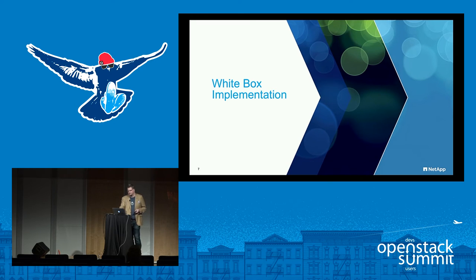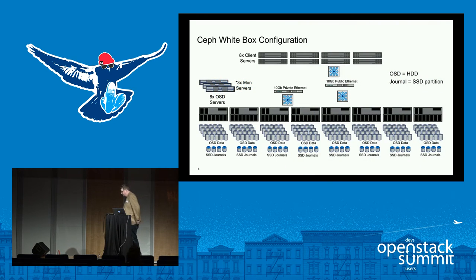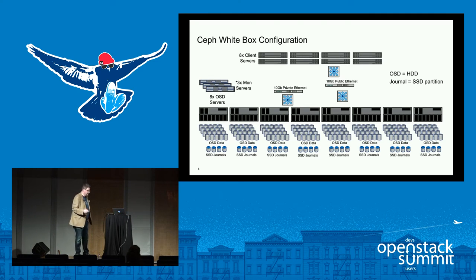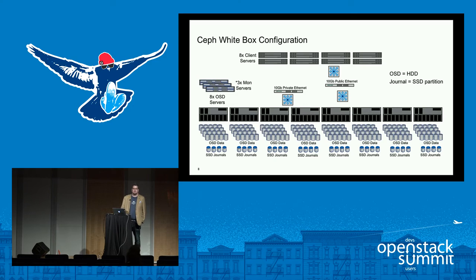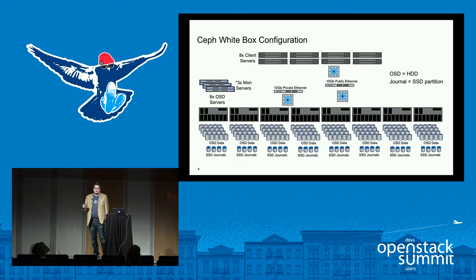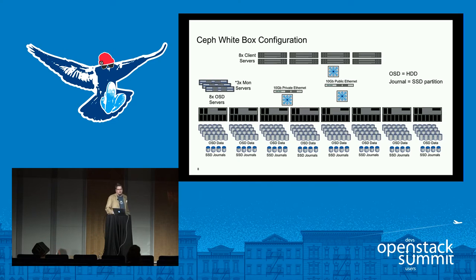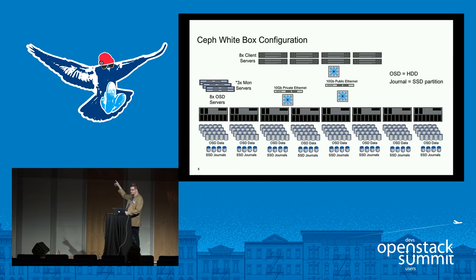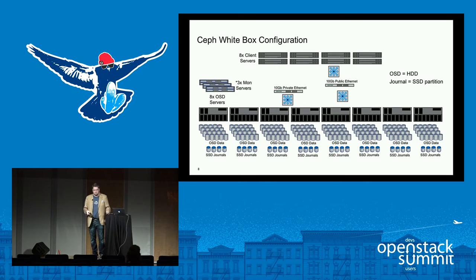What does our cluster actually look like? We have side-by-side clusters. Eight nodes is kind of the minimum you'd want to run — typically from a capacity perspective it's about 200 terabytes of actual usable data, which means roughly 600–700 terabytes raw. It's a classic configuration: eight servers with monitor services running on top of the OSDs as a service, which is a very common methodology, plus client IO.